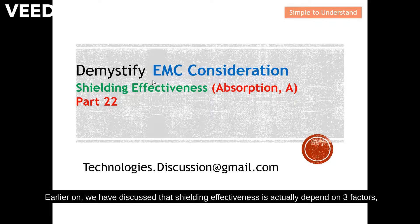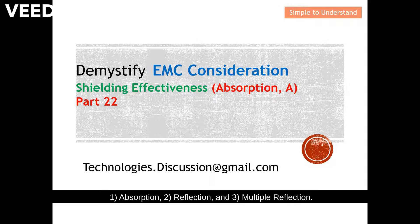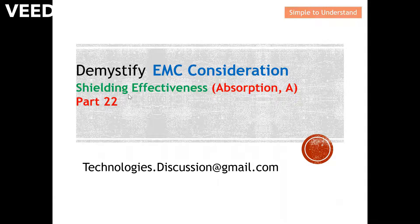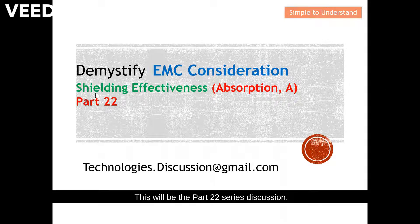Earlier we discussed that shielding effectiveness depends on three factors: number one, absorption; number two, reflection; and number three, multiple reflection. For today we are going to concentrate on absorption. This will be part 22 of our series discussion.